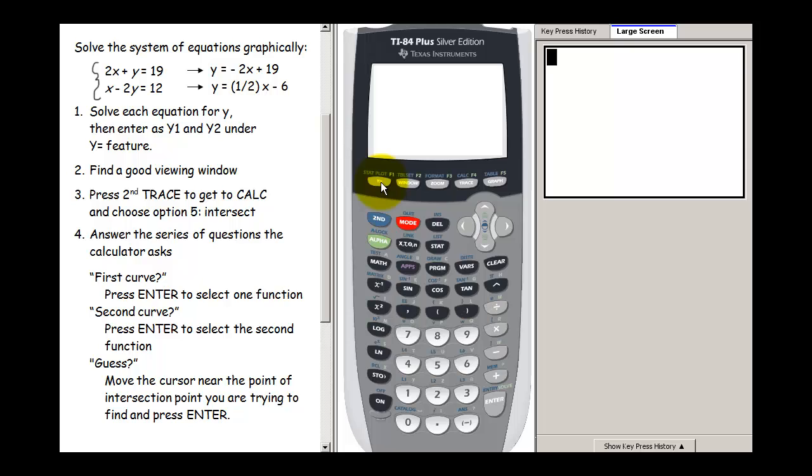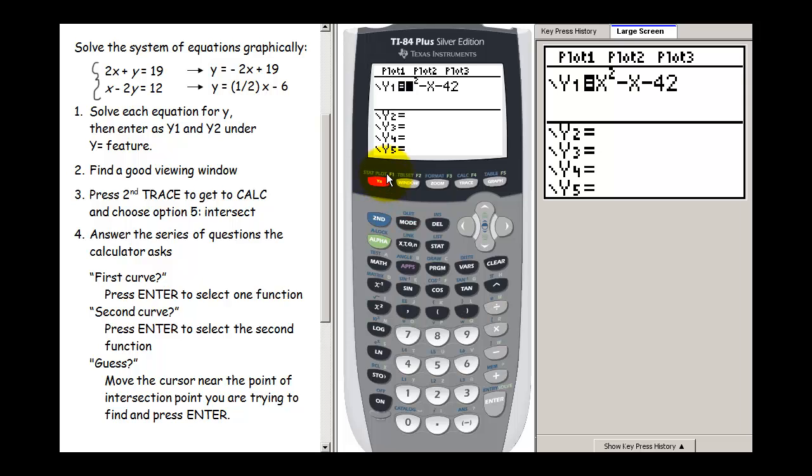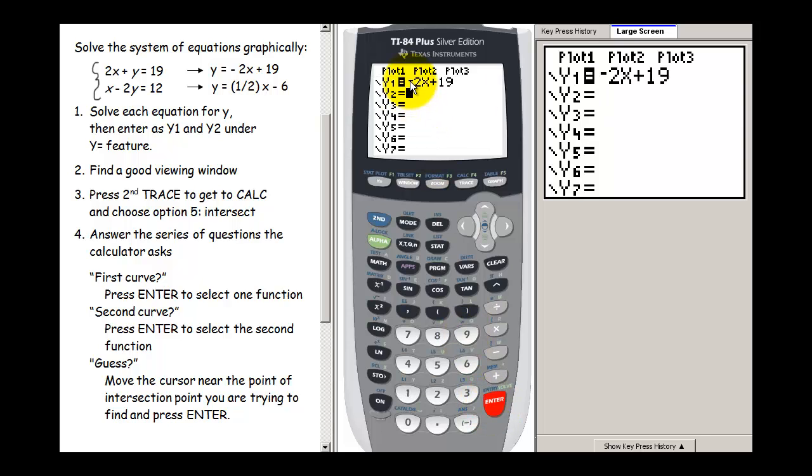Next we're going to press our y equals and input our functions. So the first thing I want to do is clear this out. I'm going to press the clear button and then I'm going to have negative 2x plus 19. And notice that when I used the negative here I used this button not this subtraction button.